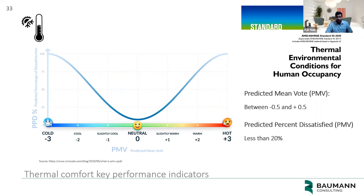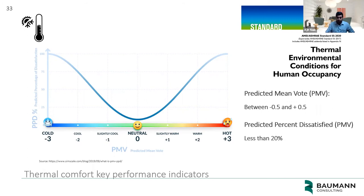Modern standards say that a predicted mean vote of negative 0.5 to positive 0.5 is generally considered comfortable, and as long as less than 20% of people are predicted to be dissatisfied, that's also considered comfortable. There are criticisms of the study — it's not really applicable for very high activity levels over about 1.5 met, it's only applicable for healthy adults and doesn't apply to older people or babies — but there are also studies that validate its applicability for the range where it applies. Even today, ASHRAE Standard 55 still uses this granddaddy of comfort metrics. It's the most common thing you'll run into.